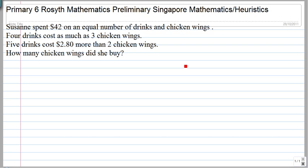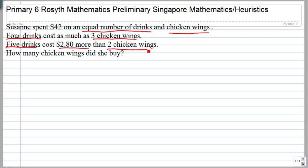This is how the question goes. Suzanne spent $42 on an equal number of drinks and chicken wings. 4 drinks cost as much as 3 chicken wings, and 5 drinks cost $2.80 more than 2 chicken wings.